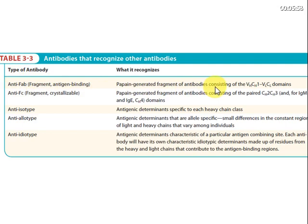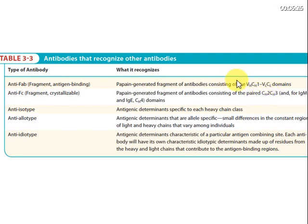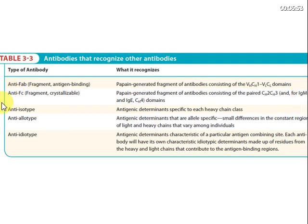Anti-Fab antibodies bind to the Fab fragment, which consists of the light chain plus a portion of the heavy chain — specifically the variable region of the heavy chain (VH), CH1, variable region of the light chain (VL), and CL. This fragment is generated by papain digestion. Anti-Fc antibodies bind to the constant region generated by papain digestion, specifically CH2, CH3, and CH4 in the case of IgE and IgM, which have an extra CH domain.